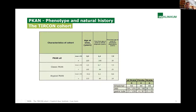We have 220 PKAN patients with a mean age of onset at eight years. Looking at how long it takes from first symptom to clinical diagnosis, there is no significant difference between the classic and atypical phenotypes — in the mean it is 6.4 years. The time from age of onset to wheelchair dependency is, in the mean, 7.9 years.